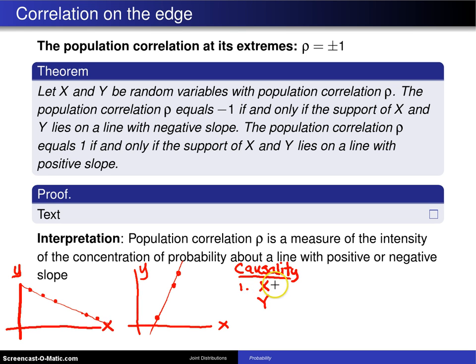One is if you let the random variable x be chewing gum sales for a country, and you let y be the number of crimes committed annually in that country. Well, if you look at small countries, like the Vatican City or Liechtenstein, you're going to have very low chewing gum sales, and you also won't have many crimes in small countries.